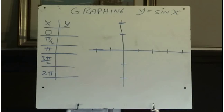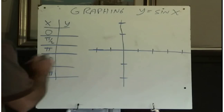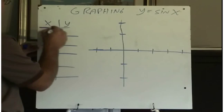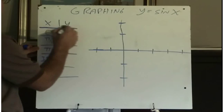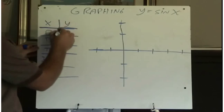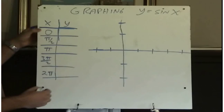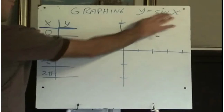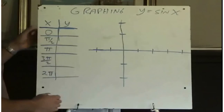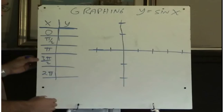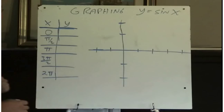We'll start with y equals sine x. I've made up a table of values. I pick some x values — because x is our angle — so 0 radians, pi over 2 radians, pi radians, 3 pi over 2, and 2 pi radians.